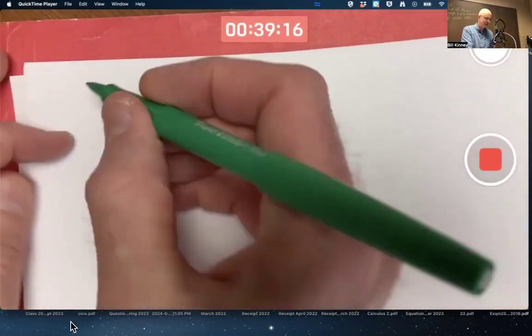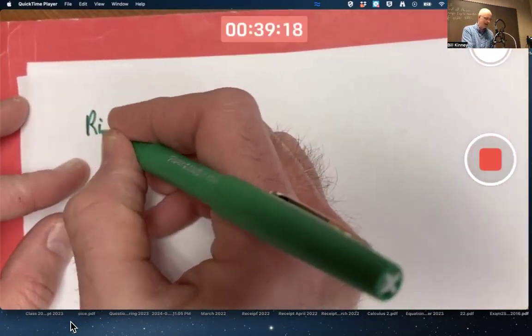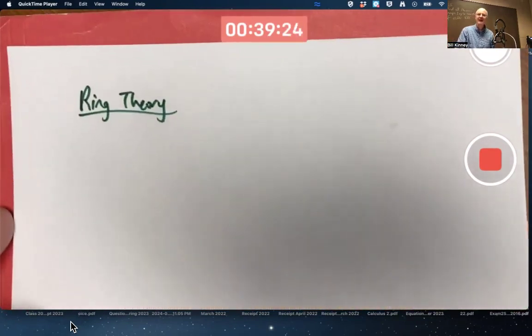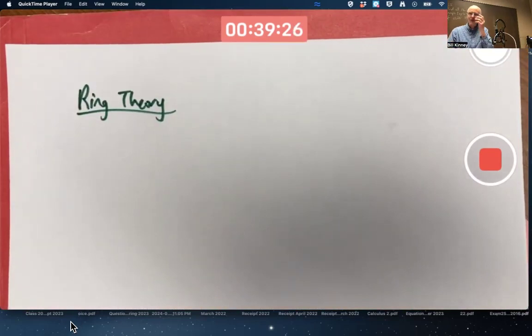Chapter 12 gets into ring theory, which I can't help but think of Lord of the Rings when I think of ring theory. Or yes, rings on your finger. But it has nothing to do with Lord of the Rings and it has nothing to do with rings on your finger. It's just a name that somebody picked and we're stuck with it. But it kind of makes me happy that we can use ordinary words like groups and rings and fields we'll also talk about. And they refer to things that most people don't know about. You know, it's our secret lingo.